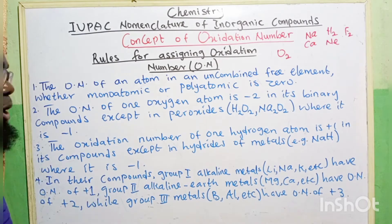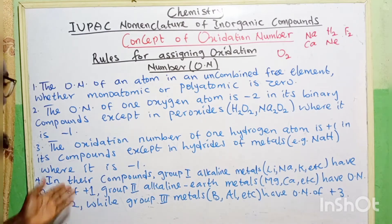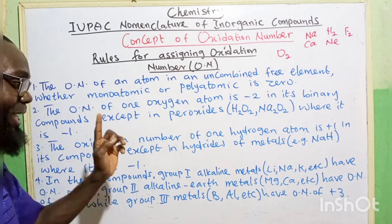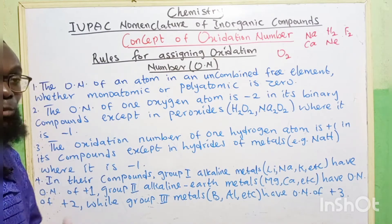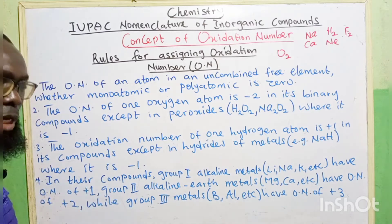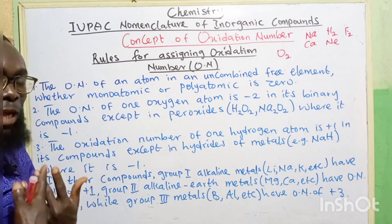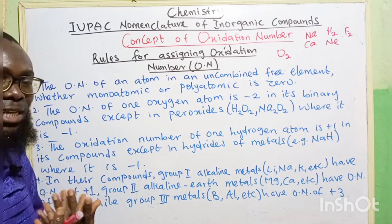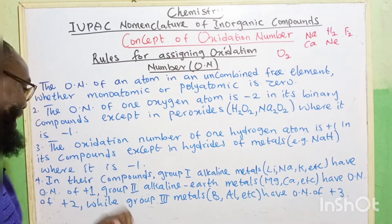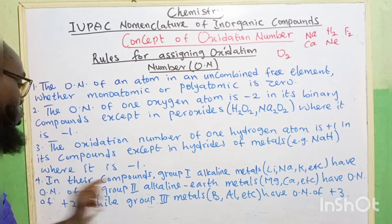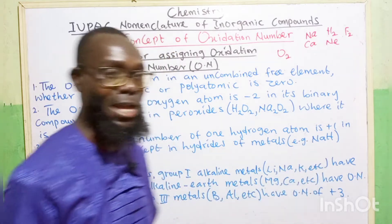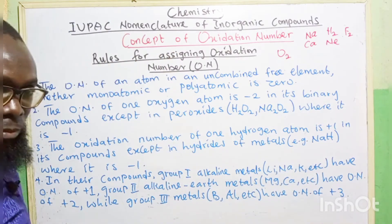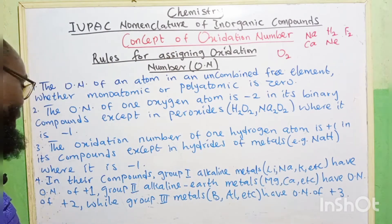Three: the oxidation number of one hydrogen atom is plus one in its compounds, except in hydrides of metals. Hydrogen always has an oxidation number of plus one. But when hydrogen is combined with a metal, the oxidation number in that state is going to be equals to minus one — like in sodium hydride, the oxidation number is minus one.